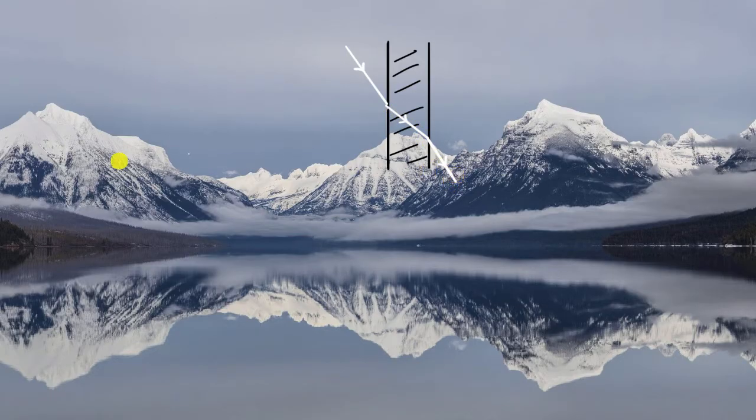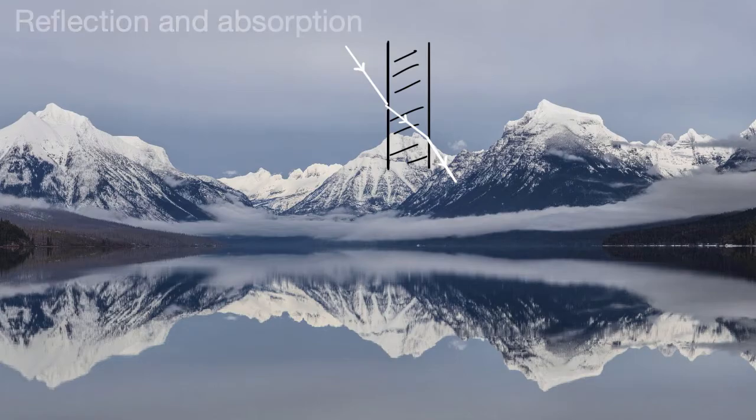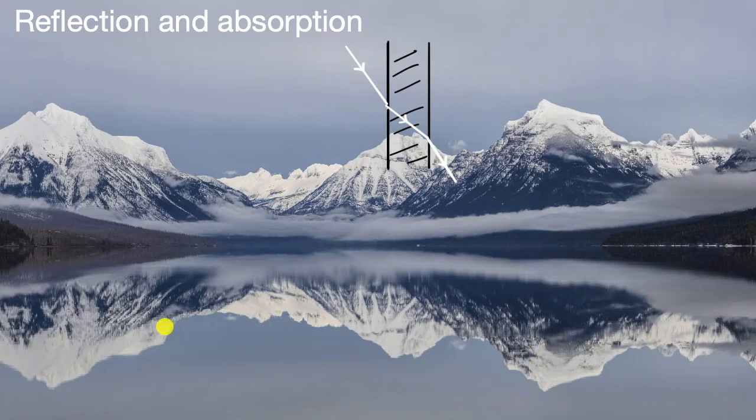Now, there are other things that light can also do, and that's the focus of this video: reflection and absorption. You probably have a sense of what happens with reflection. We can see a reflection of the mountains in the lake right over here, and the reason why we can see the reflection is because light coming from this mountain is hitting the lake and then bouncing off of it.